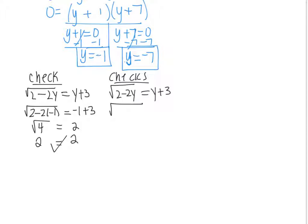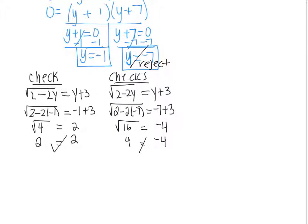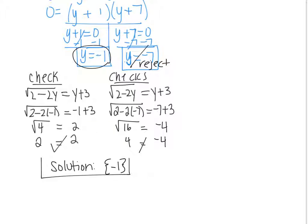Now let's check y equals negative 7. So 2 minus 2 times negative 7 equals negative 7 plus 3. This is 2 plus 14 which is 16 — the square root of 16 is 4. And negative 7 plus 3 is negative 4. 4 is not equal to negative 4, so we reject that. Our only answer is y equals negative 1. You could write the solution set in brackets like this: y equals negative 1.